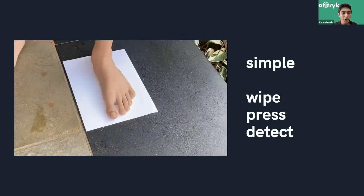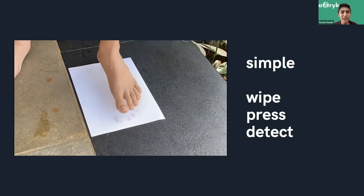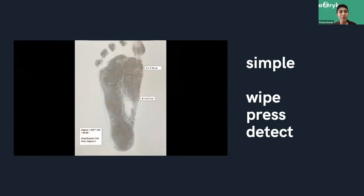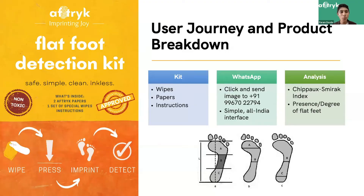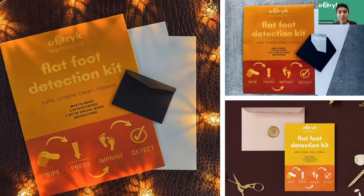We've just created a foot imprint. The Aftryk flatfoot detection kit includes a simple wipe coated with special non-toxic ink, developed by an experienced researcher and industry expert, and two specially coated sheets of paper to capture the imprint. We then analyze a WhatsApp image using the internationally recognized Chippaux-Smirak index, and a full report is sent to the consumer with analysis of the presence and severity of flat feet.